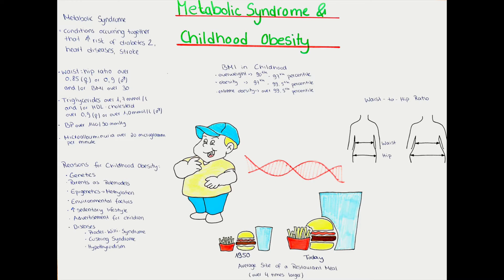Research also suggests that if a child experiences childhood obesity, this is a very powerful predictor for the accumulation of several other risk factors for metabolic syndrome in the future as an adult. This topic becomes increasingly important as in the last 40 years, the number of children suffering from childhood obesity increased 10 times. It is one of the most serious global health issues, as with obesity starting in childhood, many more adults will experience serious health conditions such as diabetes type 2, stroke, and heart diseases.